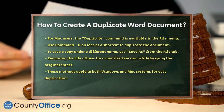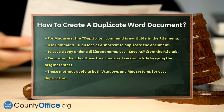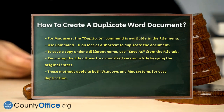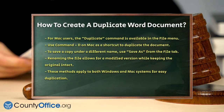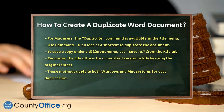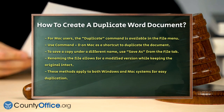Lastly, if you need to save a copy of a Word document under a different name, you can simply open the document, click on the File tab, and select Save As. Rename the file and choose a location to save it. This method is useful if you want to keep the original file intact while creating a modified version.